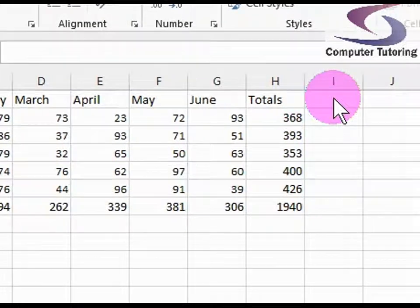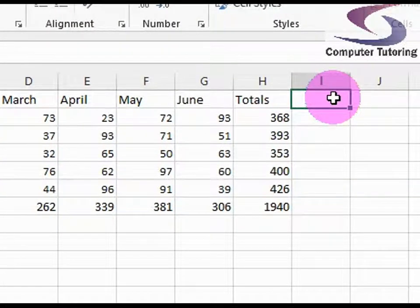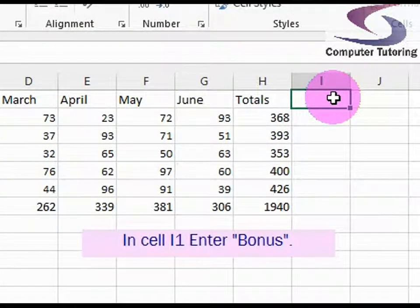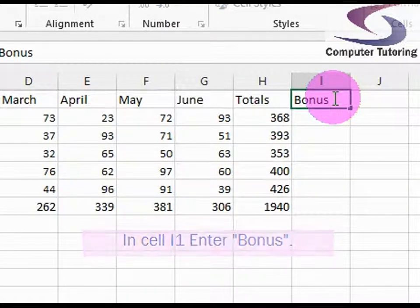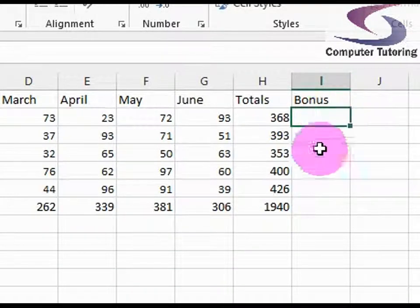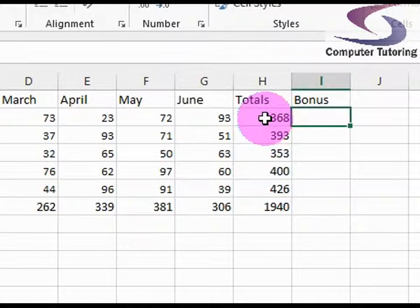So how do we do that? Well the first thing we're going to do is click here and in I1, I'm going to type in bonus and then press enter. So excellent. Now we've got 368 here.